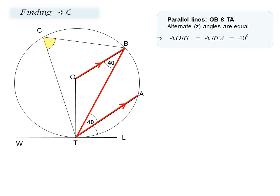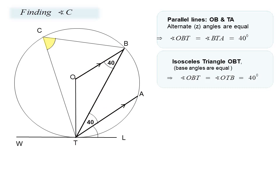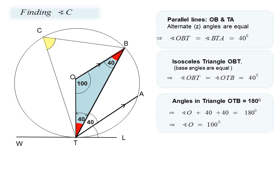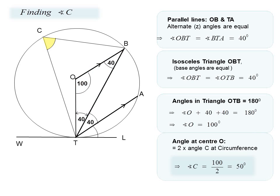Using our theory of parallel lines, angle OBT equals the given angle of 40 degrees. Since triangle OBT is an isosceles triangle, the base angle is also equal to 40 degrees. This gives us immediately the third angle at the center as 100 degrees, since angles in a triangle must equal 180 degrees. From this, angle C is half angle O, which is 50 degrees.